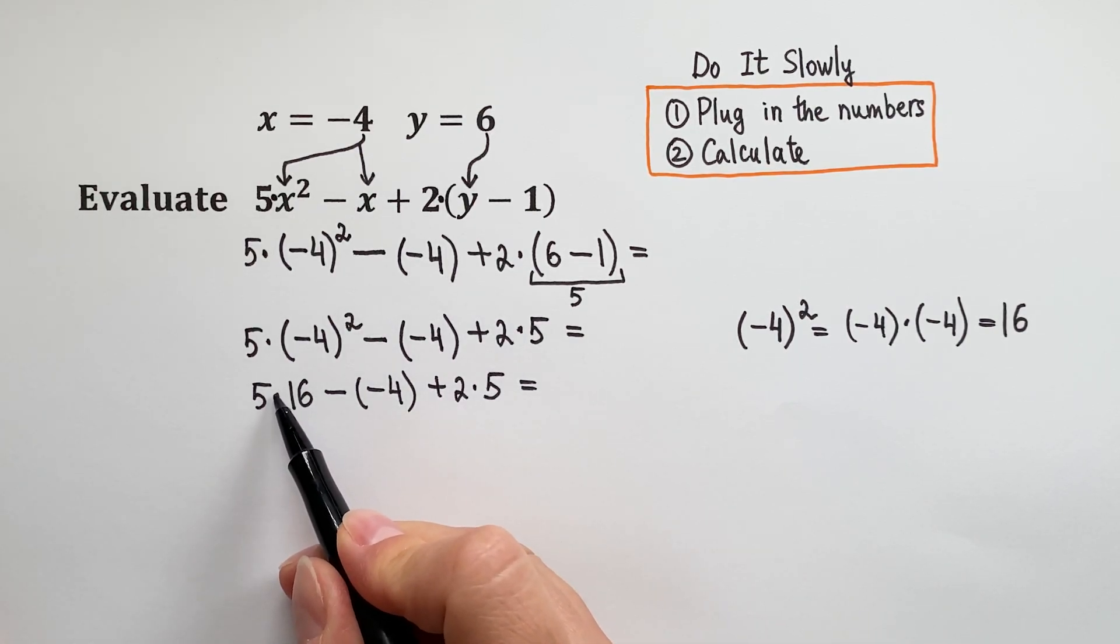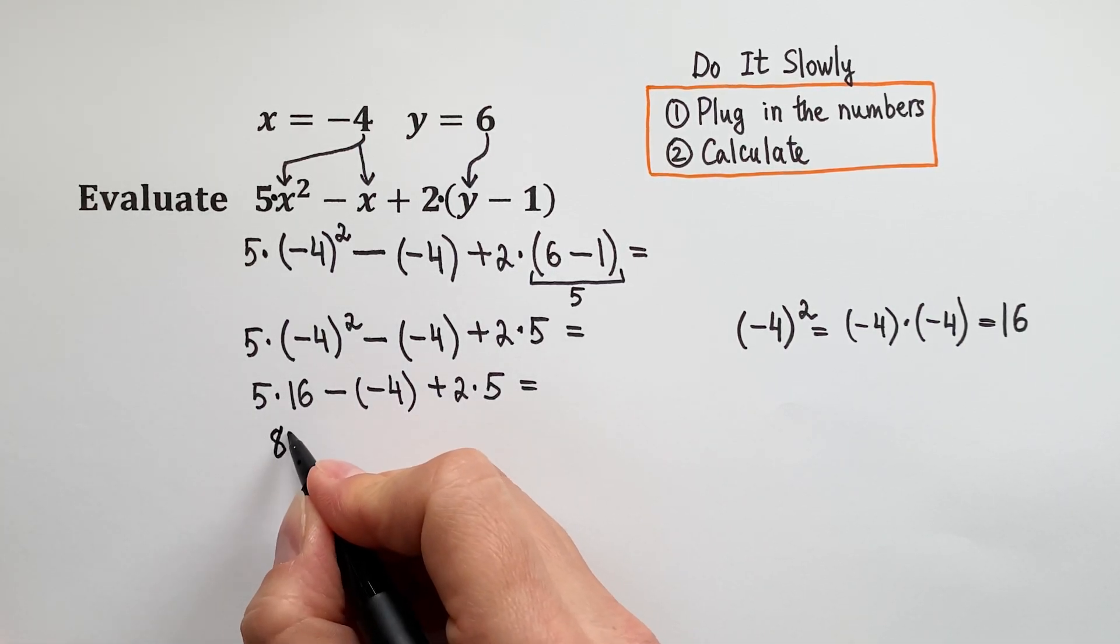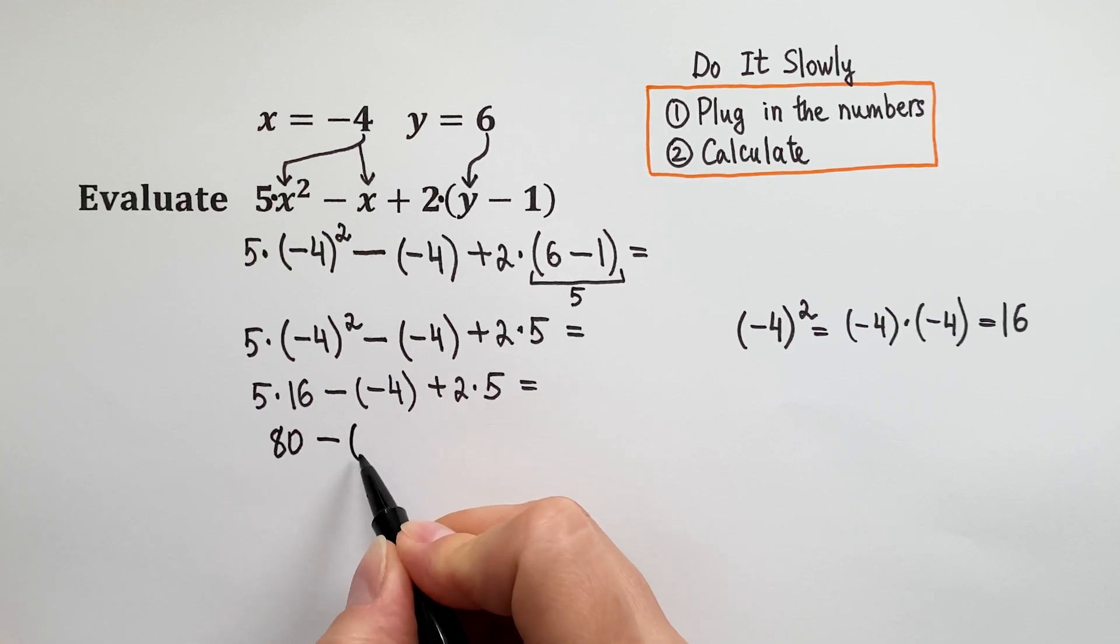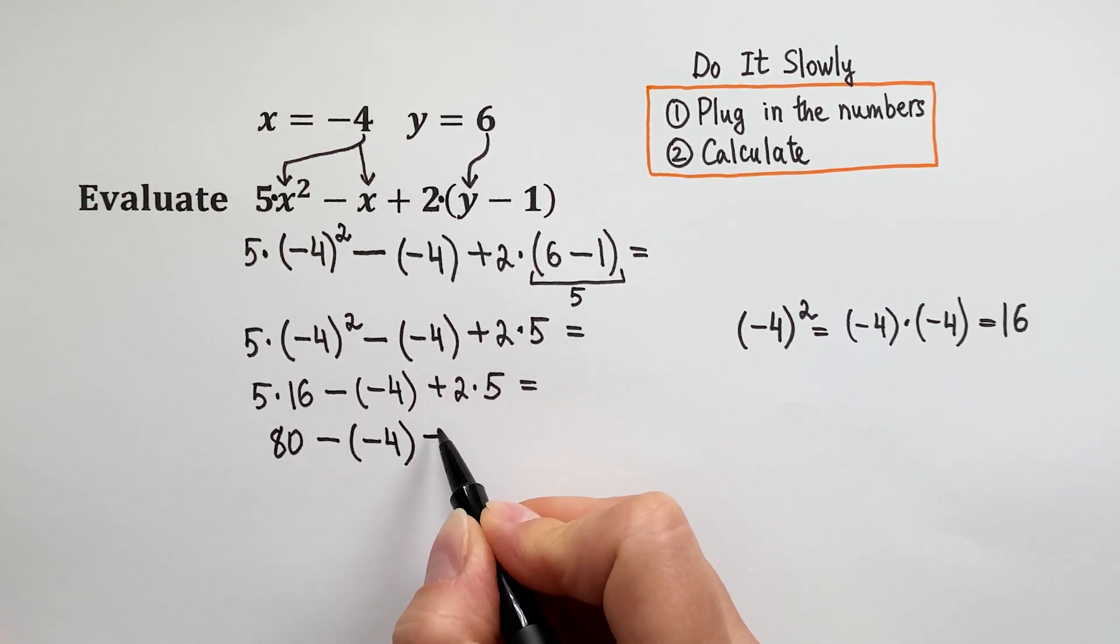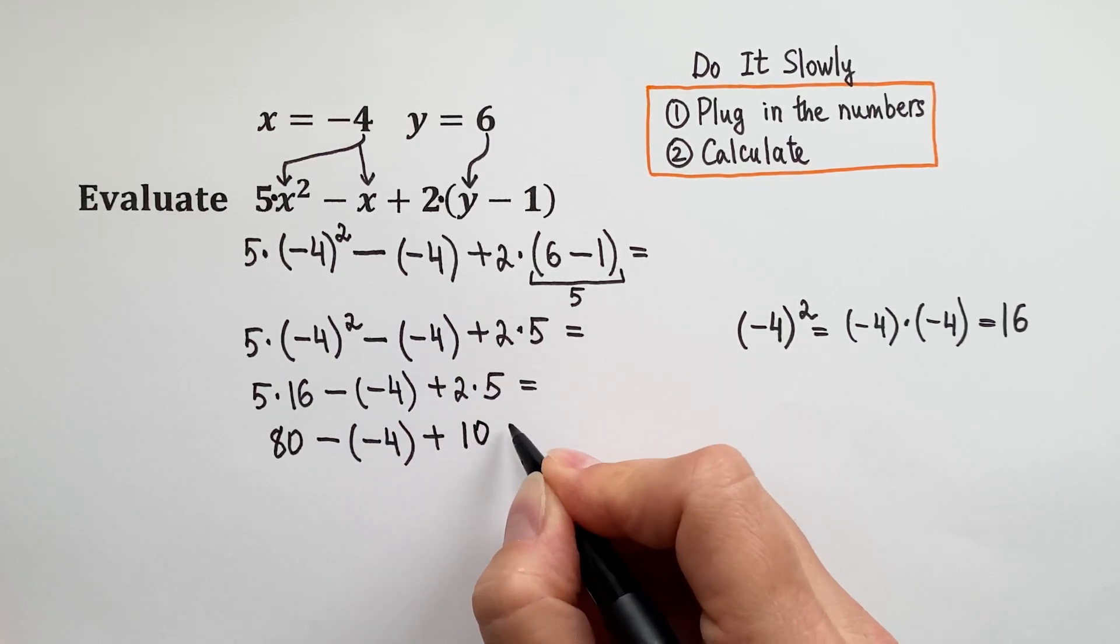Next we must take care of multiplication. 5 times 16 is 80. Very good! Minus negative 4 plus... And let's multiply these numbers on this end. 2 times 5 is 10.